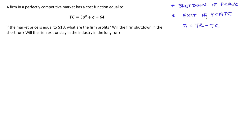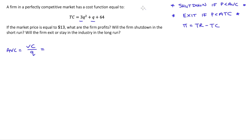The first thing I'm going to do is find average variable costs and average total costs. I'll also find marginal costs because I'll need that to find the profit-maximizing level of production. Average variable cost (AVC) equals variable costs divided by quantity. Looking at our total cost function, variable costs are the components that include quantity — so as quantity changes, those costs change. Variable cost is 3Q squared plus Q.